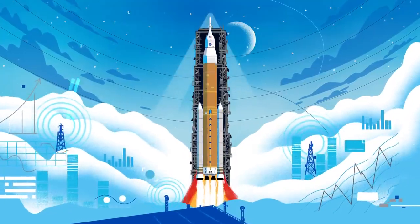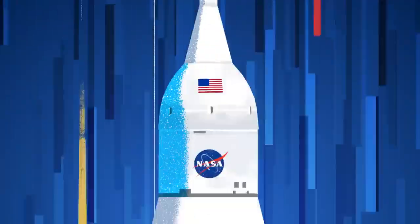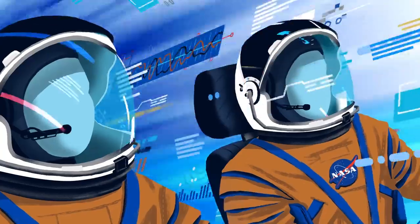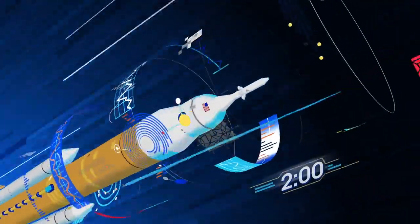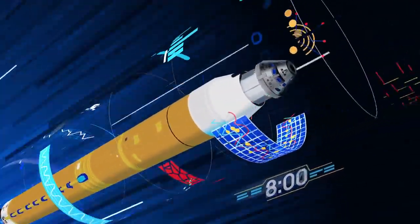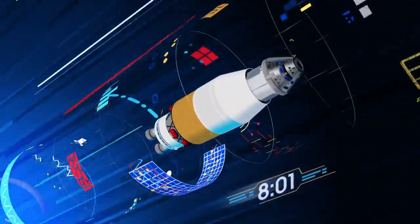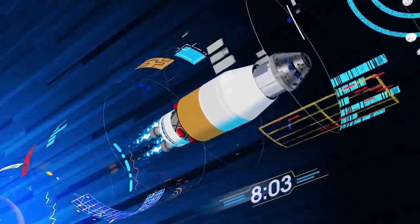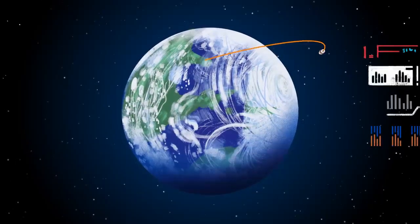All four RS-25 engines and the two solid rocket boosters come to life, thundering our crew upwards. Two minutes after ignition, the solid rocket boosters are spent and released. Eight minutes after launch, the core stage is depleted and separated. The upper stage fires briefly, placing Orion into a parking orbit around the Earth.